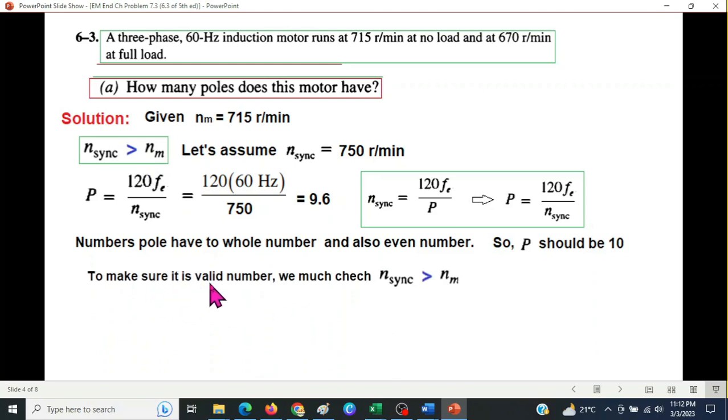Make sure that it is a valid number, we must check that n-sync is greater than n-m. So we have to calculate n-sync for this new pole using the same formula. So the n-sync is 720 revolutions per minute.